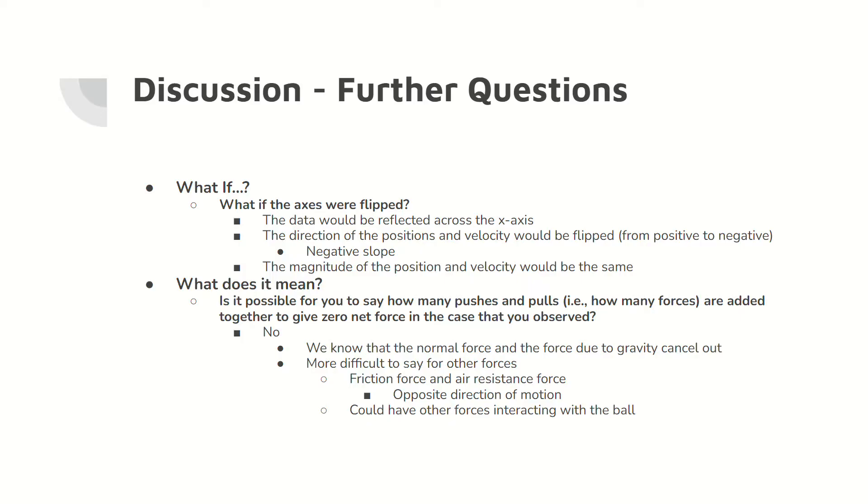It is not possible for us to say what or how many forces are responsible for a zero net force in the observed motion of the baseball. While the normal force and the force due to gravity cancel each other out, it is more difficult to consider other forces. We know that the force due to friction and air resistance act against the motion of the baseball, but we do not know the forces that allow the baseball to continue rolling at a relatively constant velocity to counter friction and air resistance.